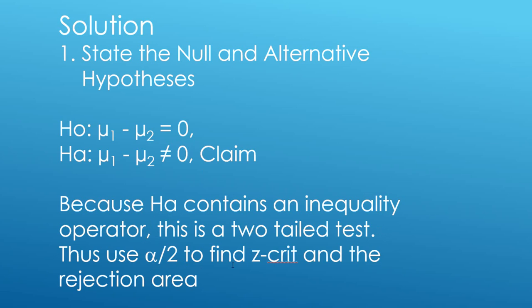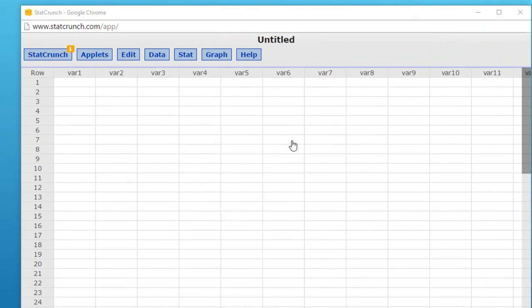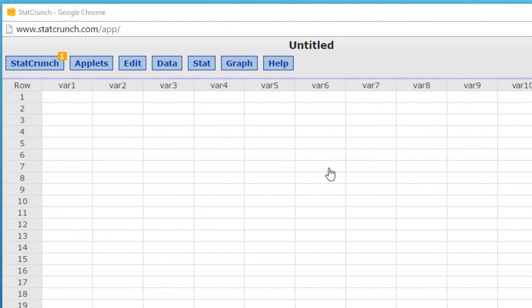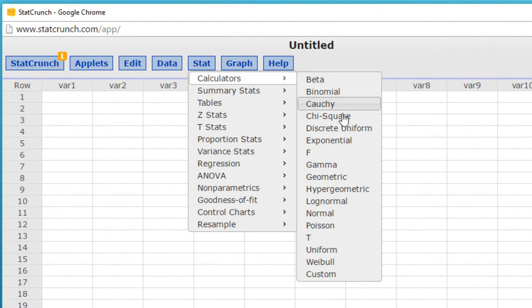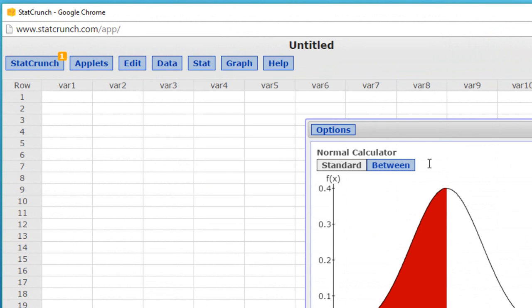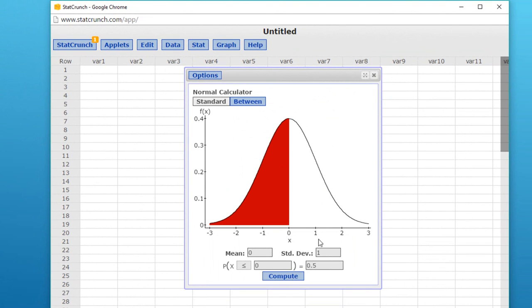That means we have to put alpha over 2 on each end of the standard normal curve to find the rejection area. So let's look at StatCrunch. I've opened up StatCrunch, and to find the rejection region we just go to Stat, Calculators, Normal, and we get our little sketch of our standard normal situation.